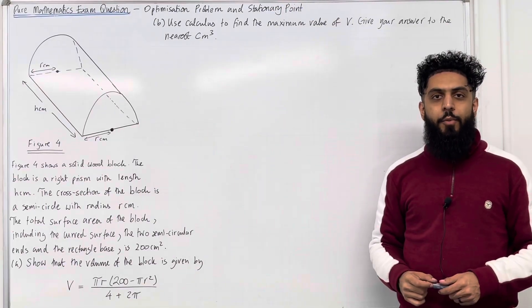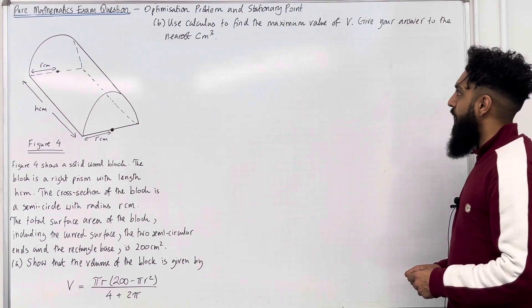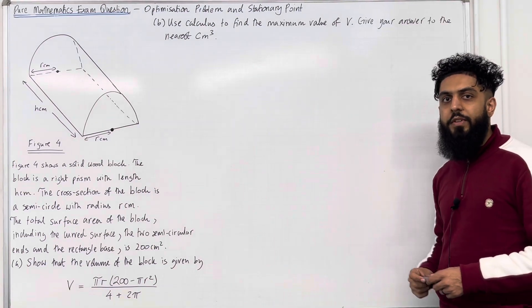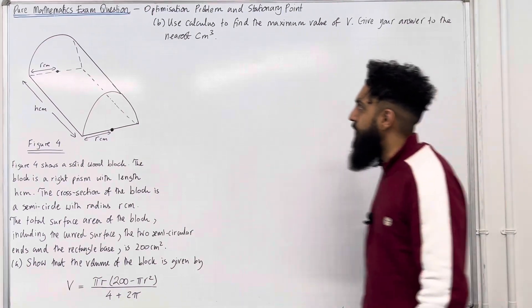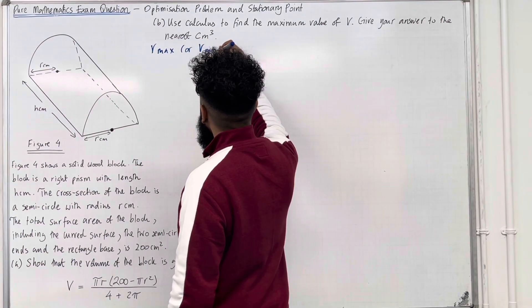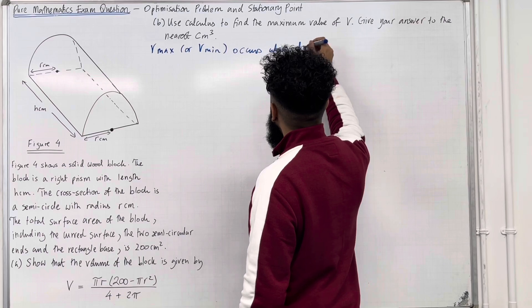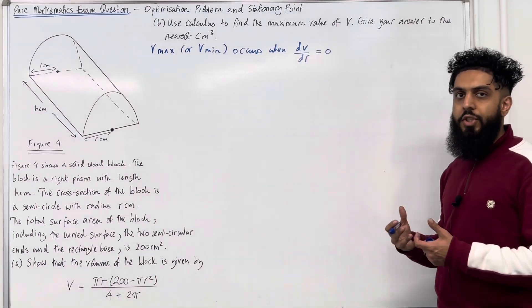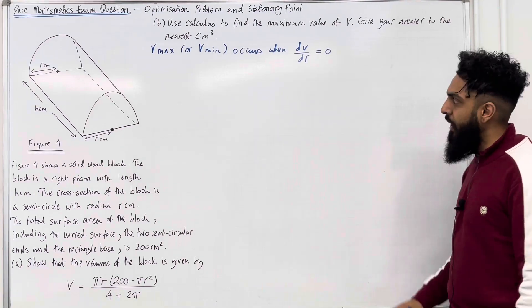Let's have a look at part B of the exam question: use calculus to find the maximum value of V, giving your answer to the nearest centimetre cubed. Please pause the video and have a go. V max or V min occurs when dV/dr equals 0. In other words, a function is maximized or minimized when the gradient equals 0. That's our key fact.